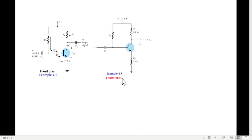Then this was the emitter bias, and example 4.7 was solved. And this is a voltage divider bias, and example 4.8 was solved.